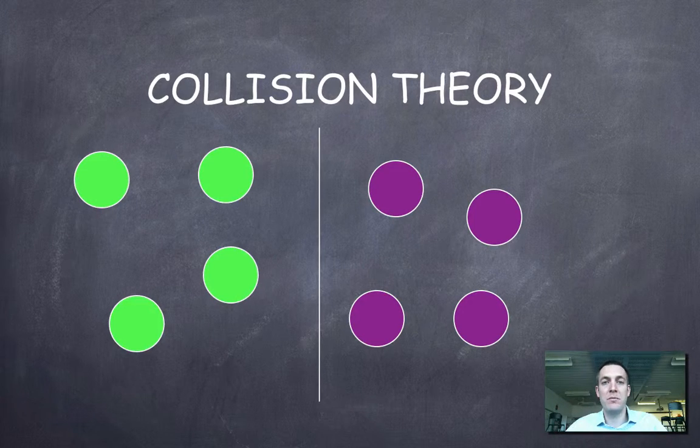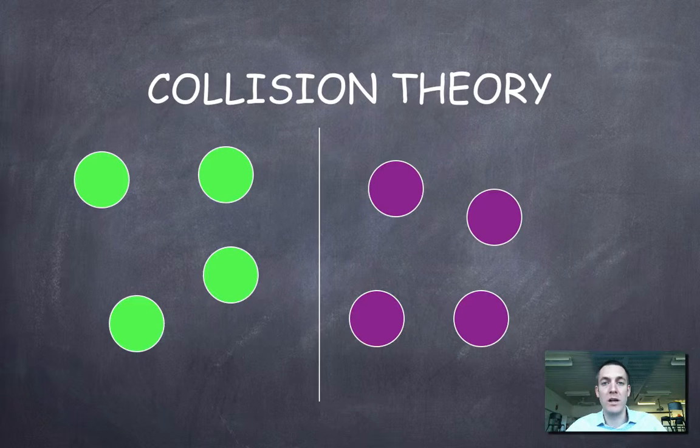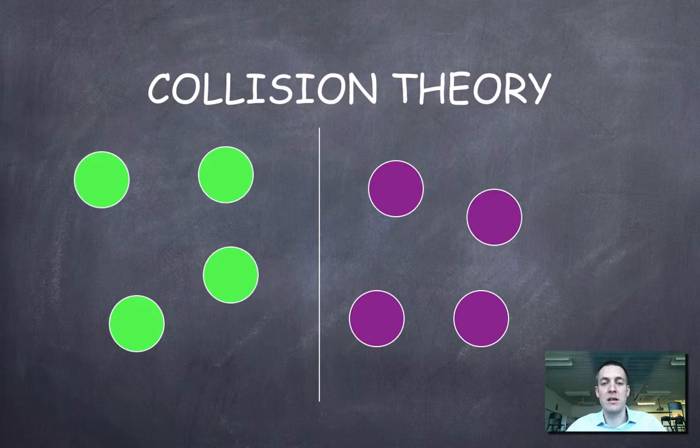And I suppose this is the most obvious or maybe easiest to remember part of collision theory. It says that in order for two particles to react together, they have to be able to collide with one another. Hence the name, collision theory.